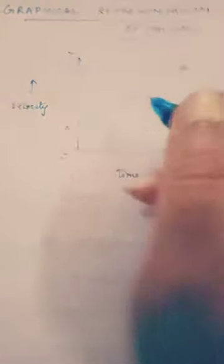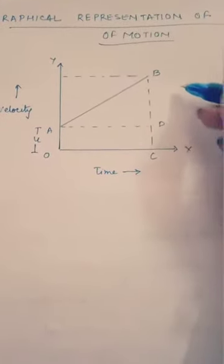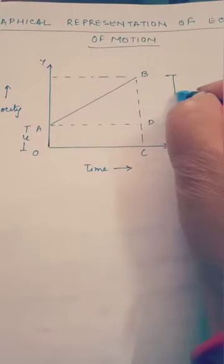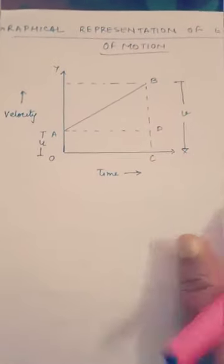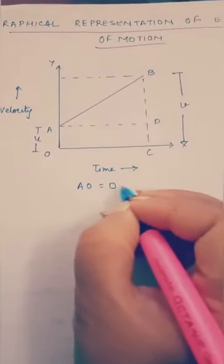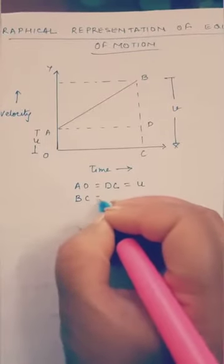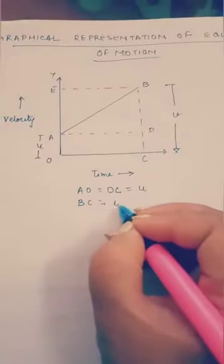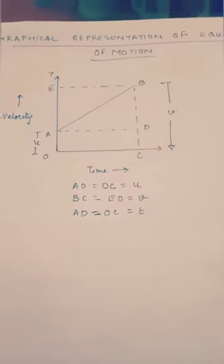I have taken the value of U over here — this is not zero, meaning the body is not starting from rest. So I have taken some value of initial velocity U, which equals OA. On the Y axis, BC is the final velocity V. AO is parallel to DC and equals the initial velocity. BC also equals EO, which equals V, the final velocity. AD equals OC, and the value is T, which is the time period.